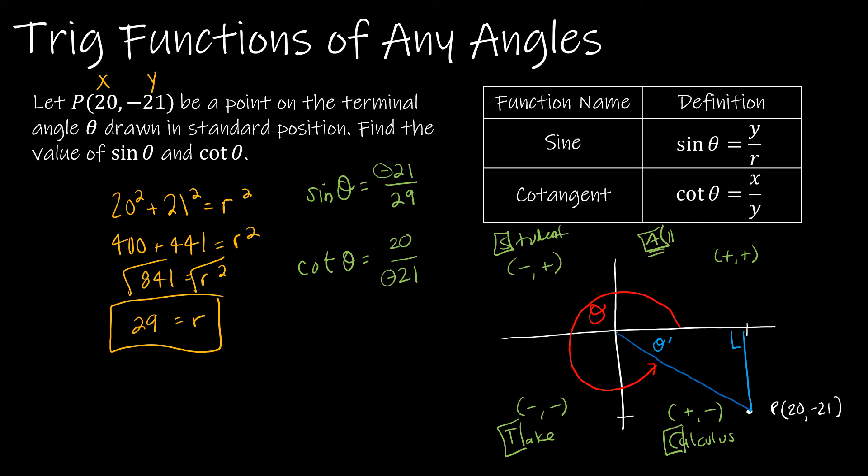is an acronym to help you remember which functions are positive in each quadrant. A means all sine, cosine, and tangent are positive, and their reciprocals also. S means sine is positive and the others are negative. T means tangent is positive and the others are negative. C means cosine is positive and the others are negative.